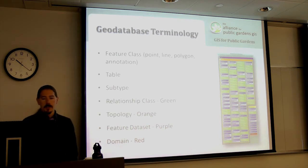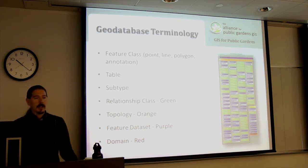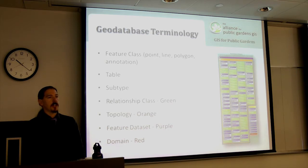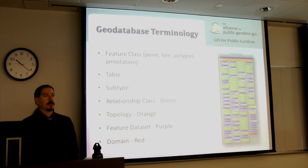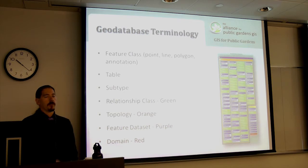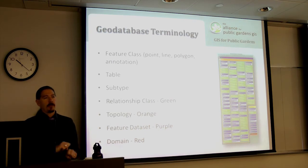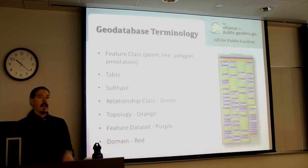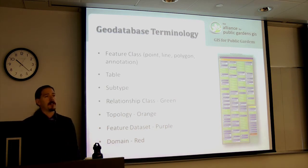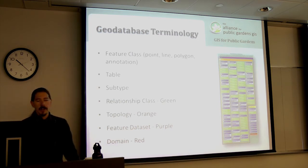There's also a thing called a relationship that basically connects different things together. For example, a particular section of our garden may have a boundary drawn around it, and inside that section we may have different planting areas or spots where we plant our plants. When you click on that section, it's related to those planting areas so you can see all the different planting areas inside of it, and then all the different plants inside of those planting areas. All those things are connected together so it's really easy to organize and manage our information.